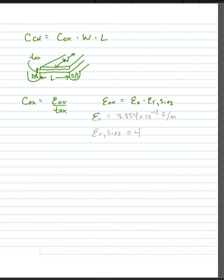And Eox is equal to the permeability of free space times the relative permittivity of the material, in this case silicon dioxide. And our relative permittivity of free space is equal to 8.854 times 10 to the minus 12 farads per meter. And the relative permittivity of silicon dioxide is approximately equal to 4.